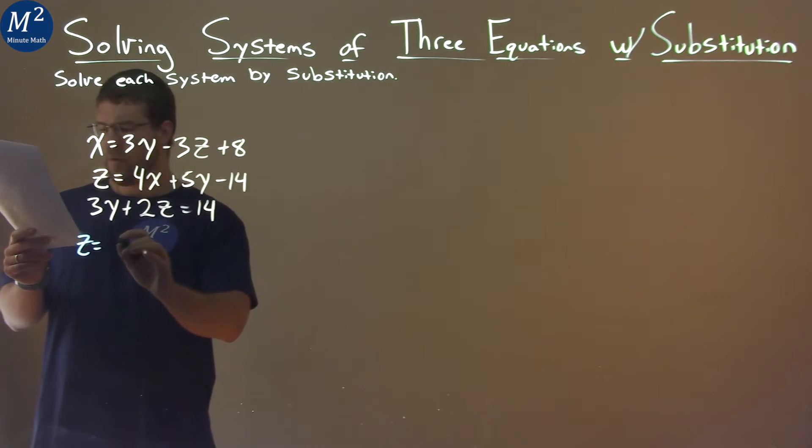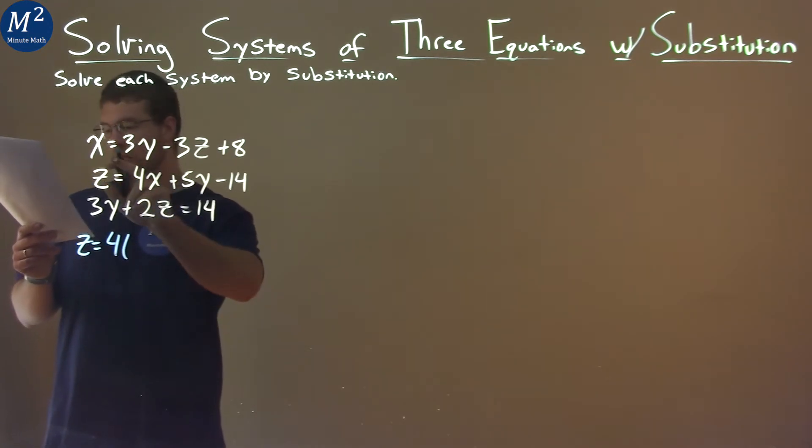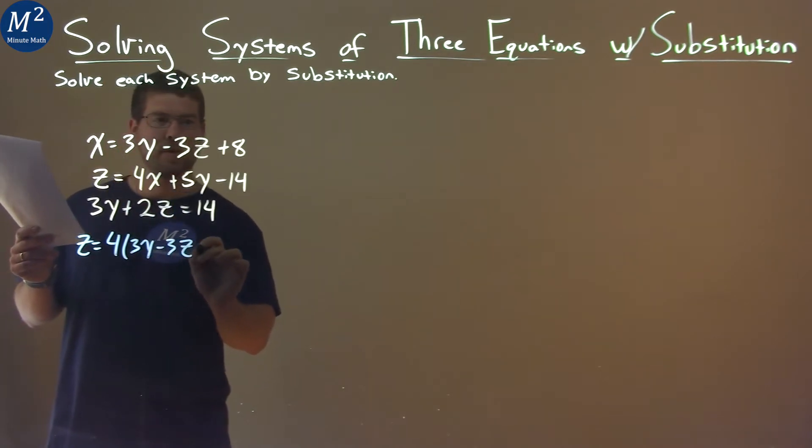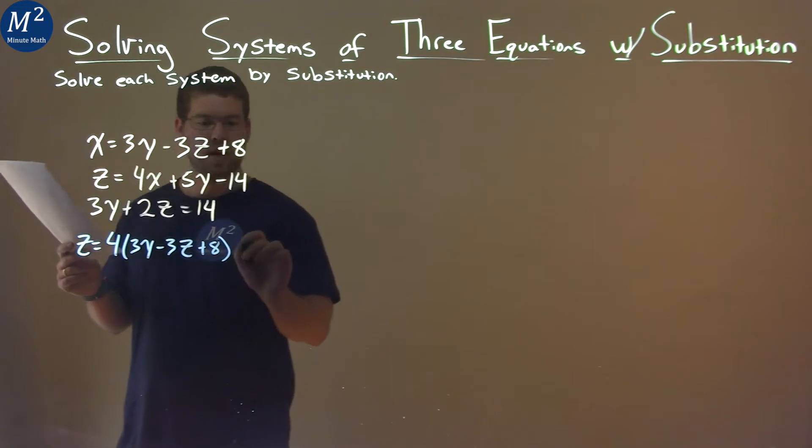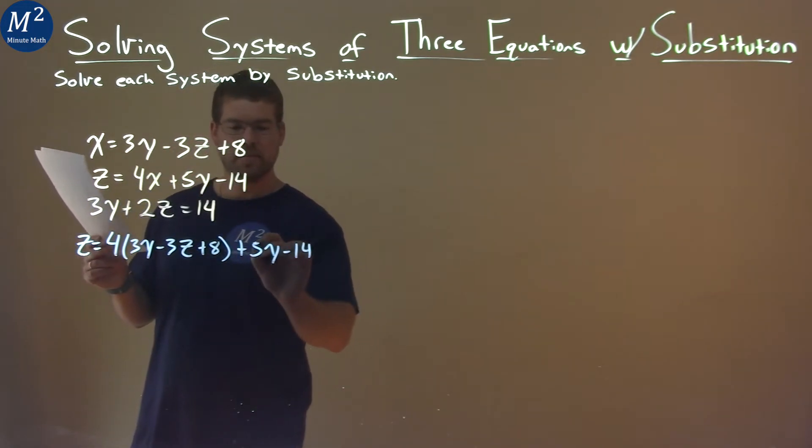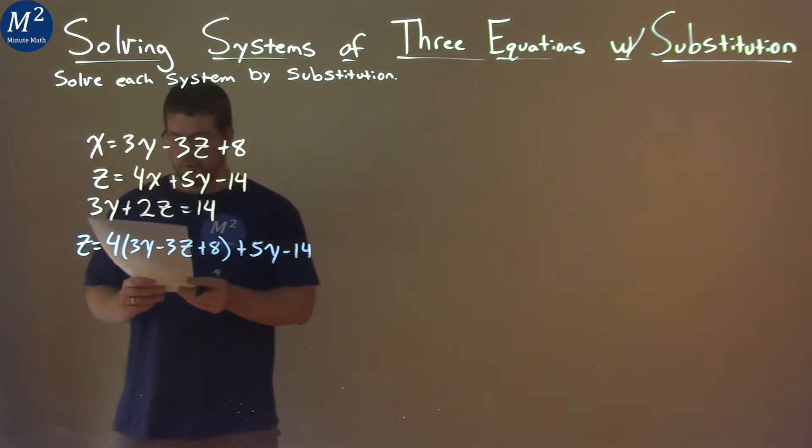z equals, well, 4, and instead of x, I'm going to put in this whole big top equation, 3y minus 3z plus 8. Then we have plus a 5y minus 14. Woof. Well, let's simplify this.